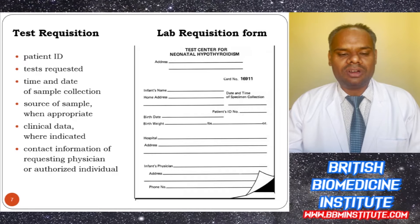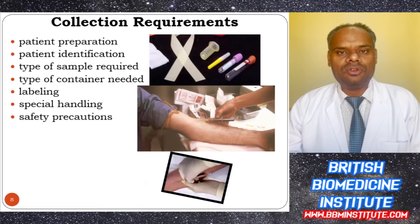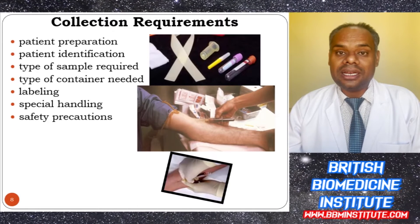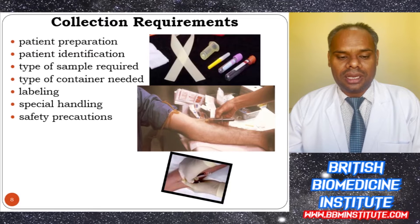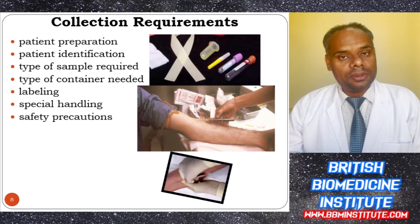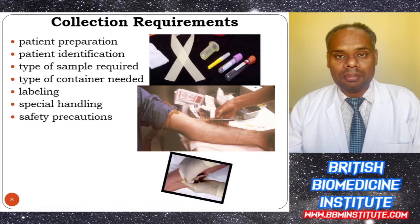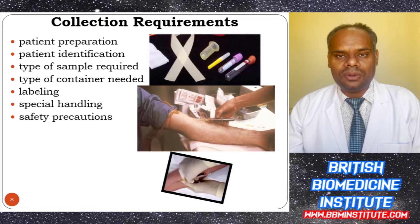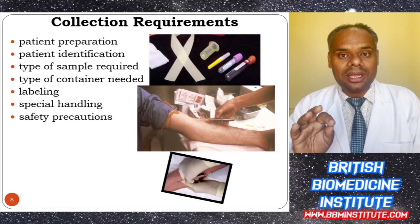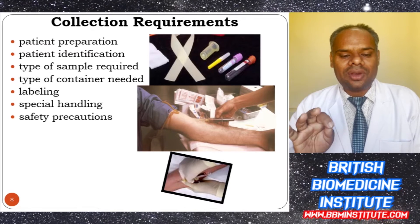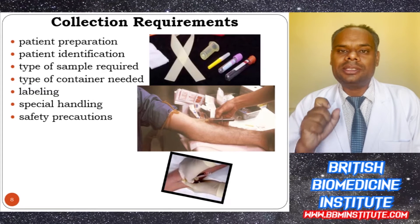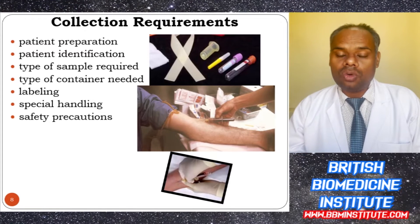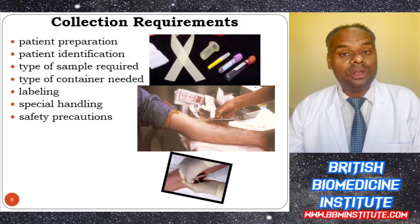For collection requirements, we have to prepare the patient and obtain patient identification, determine the type of patient sample required, the type of container required for blood sampling, label the empty vial, ensure special handling conditions, and follow safety precautions.